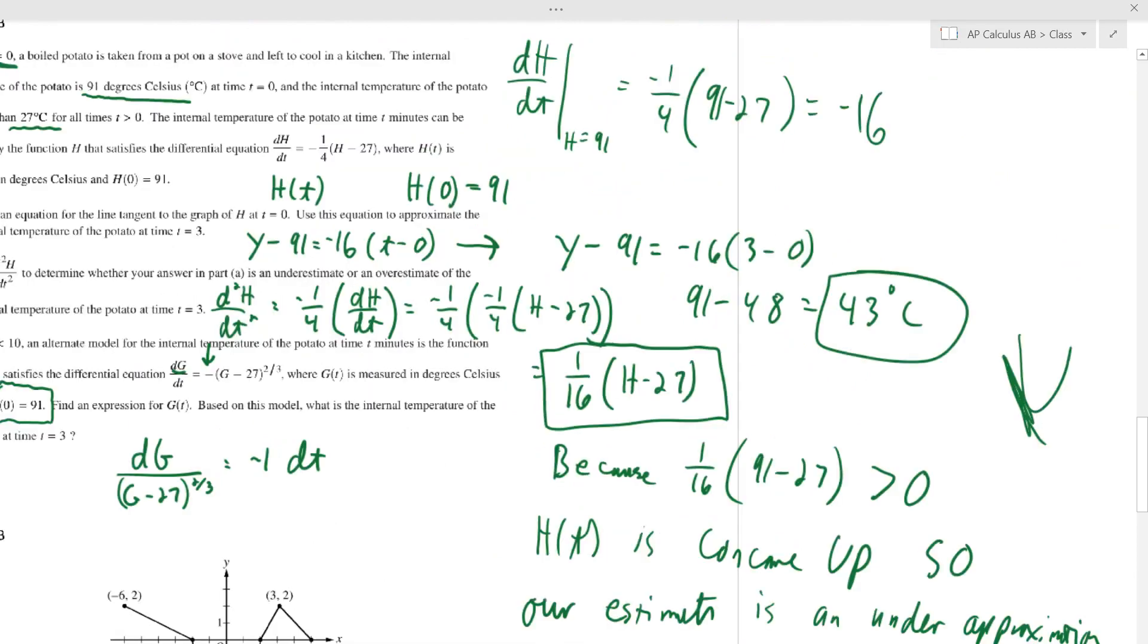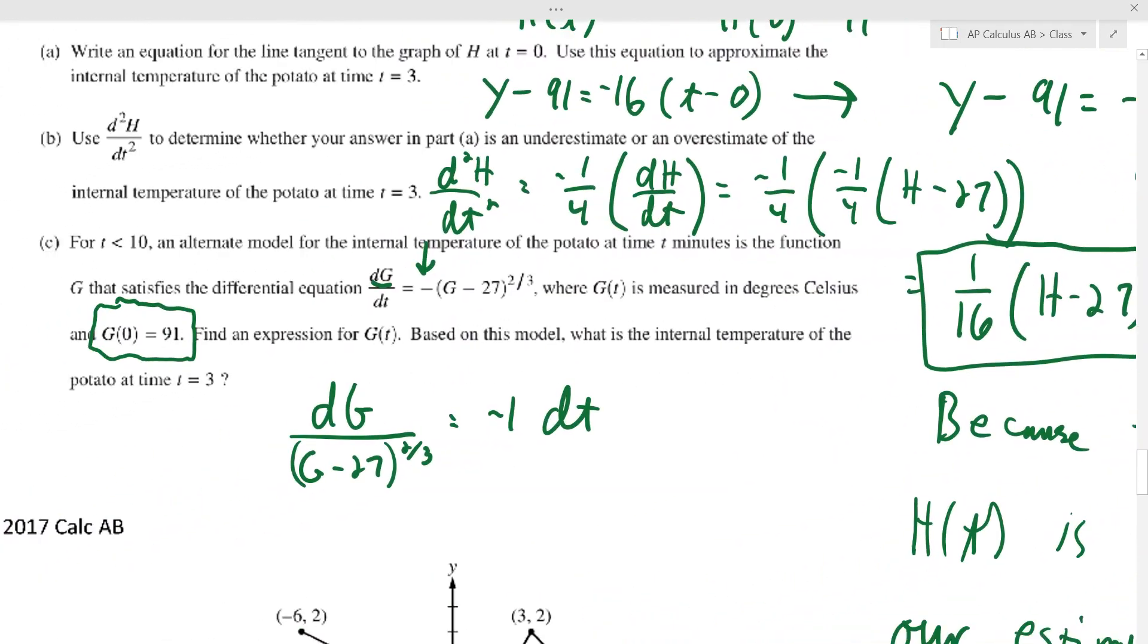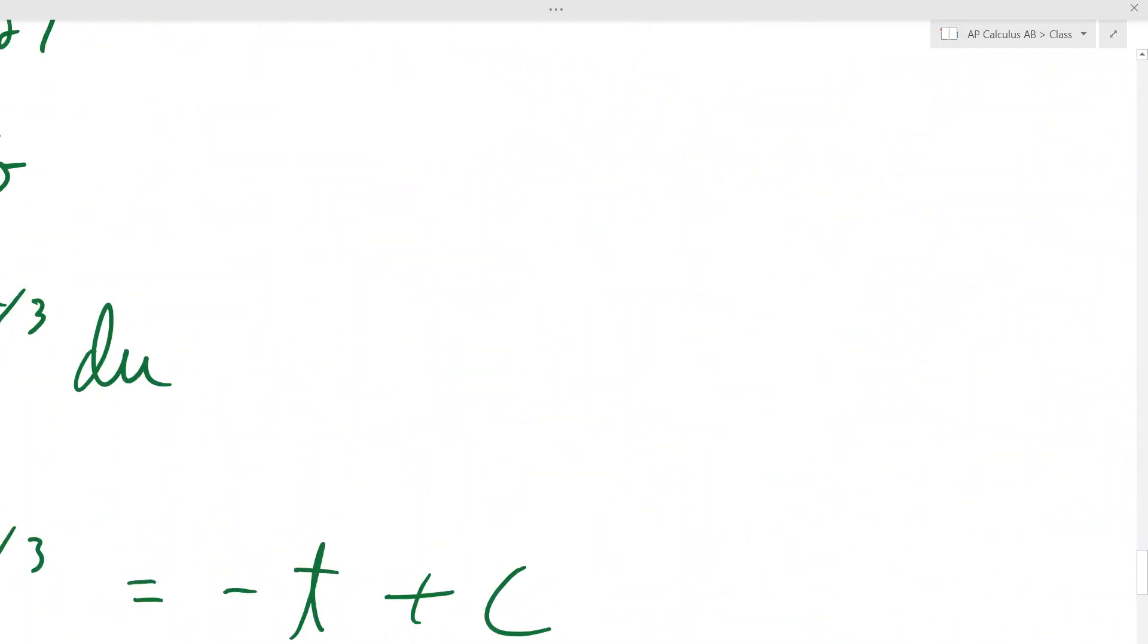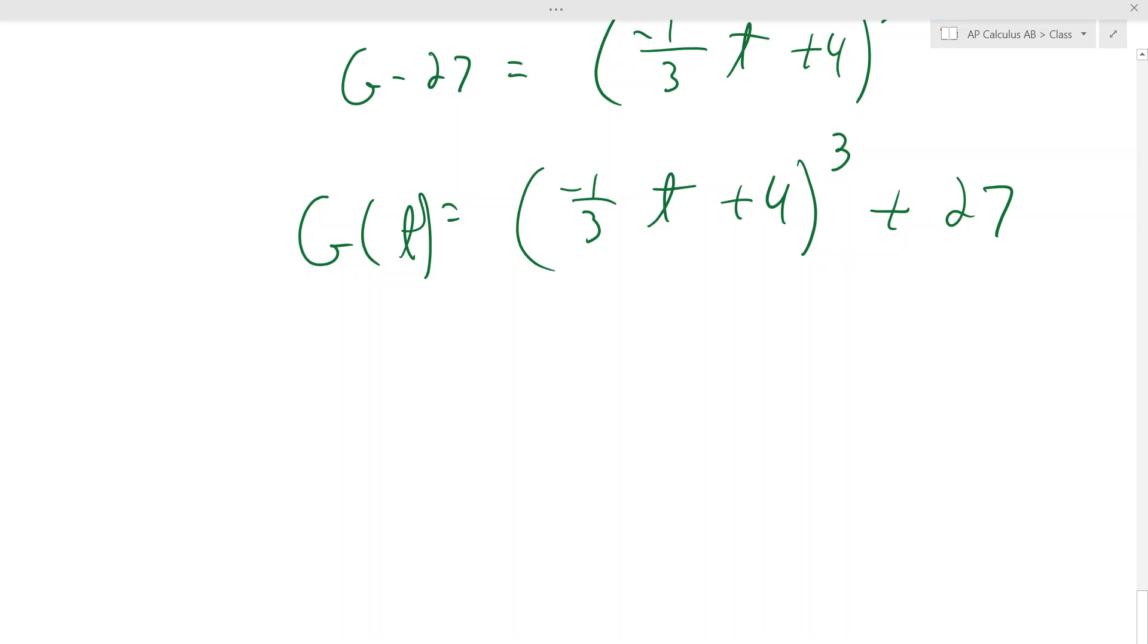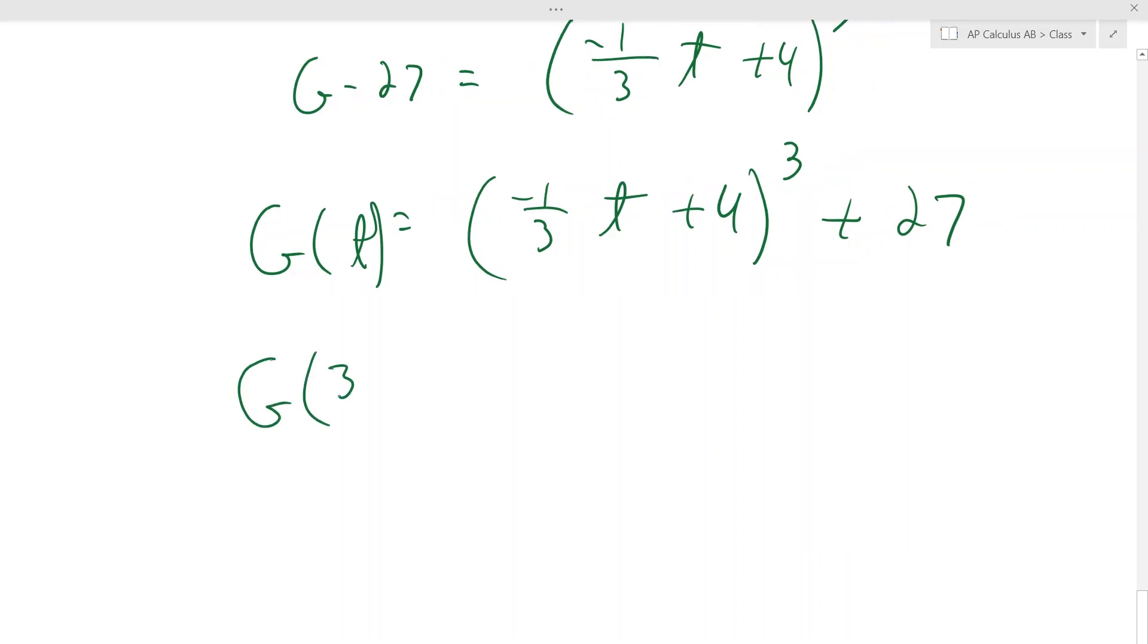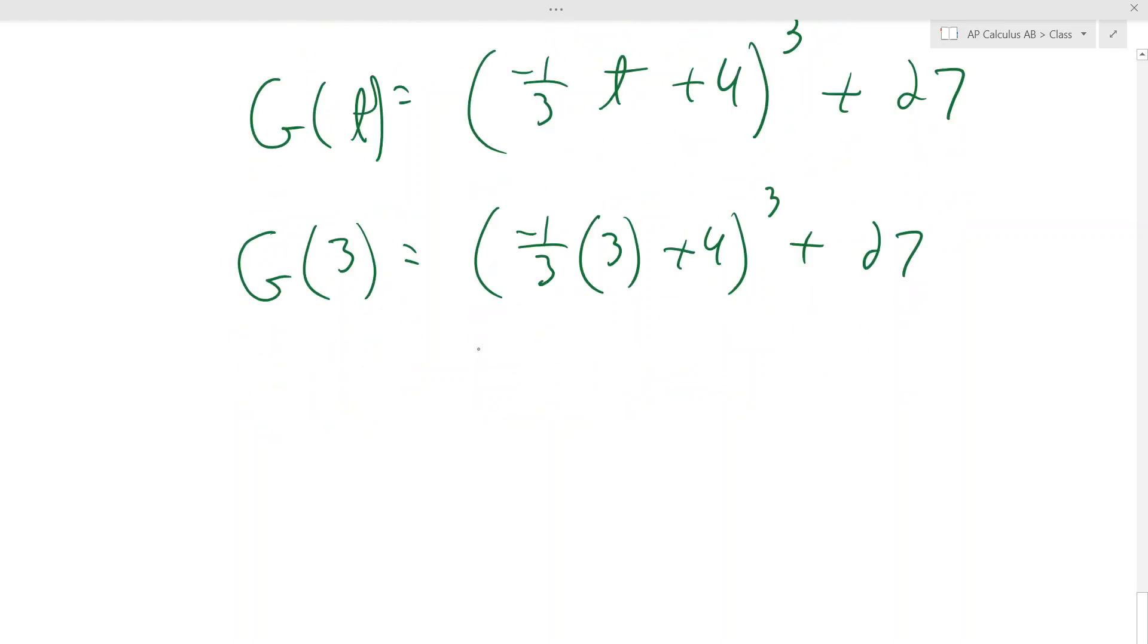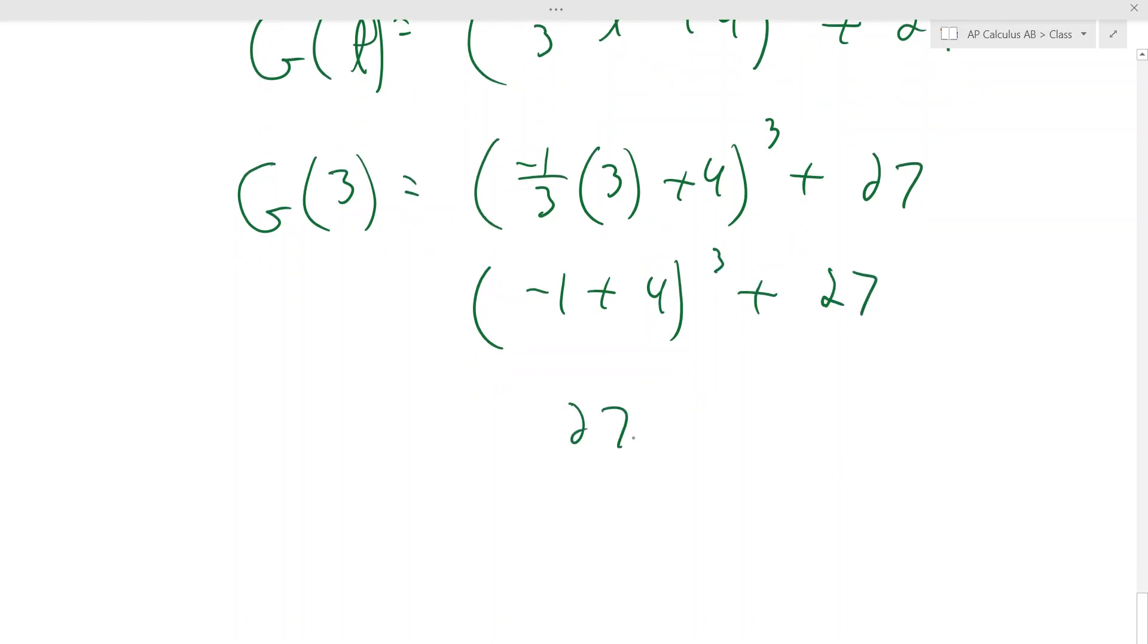And I think the question was use this to approximate again the temperature at three. So based on this model, that still just means plug in three, except now we're not plugging into a tangent line. We're plugging it into an actual function that we found. So G of three is negative one third times three plus four cubed plus 27. And negative one third times three is negative one plus four cubed plus 27. That's three cubed. That's 27 plus 27. And that happens to be 54 degrees Celsius.